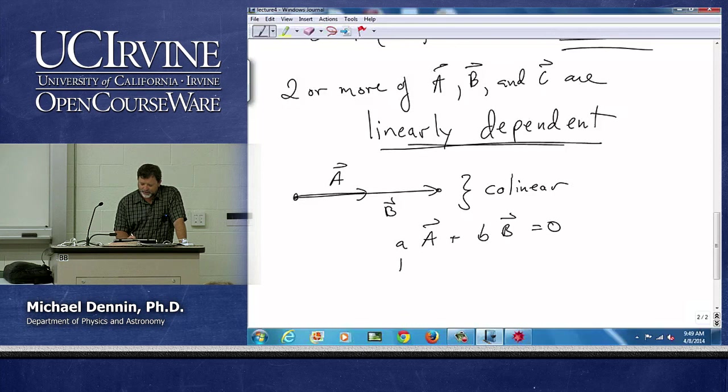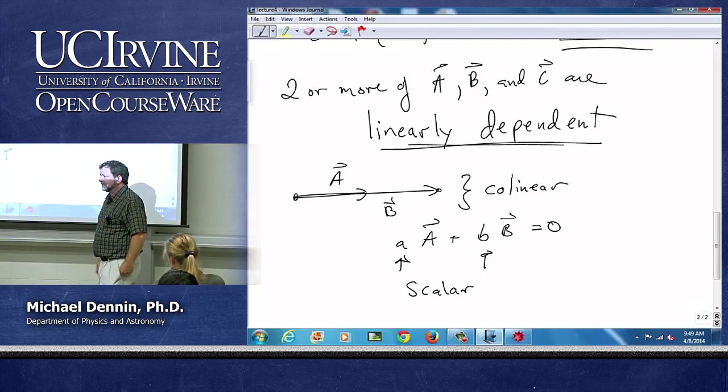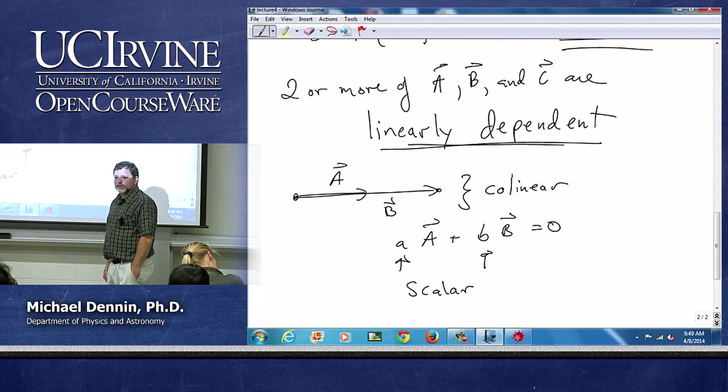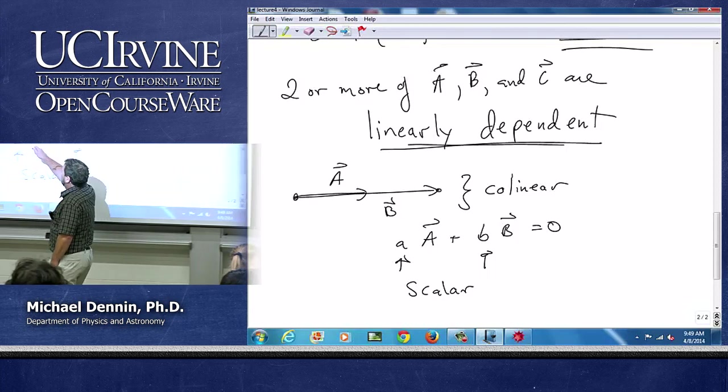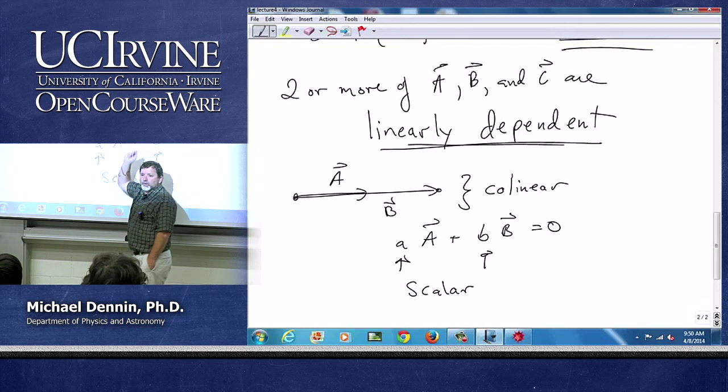If I want to take a scalar and multiply it by each of those vectors and add it to zero, can I do that when they're collinear? Yeah, what do I need to do? What would I need to do to make it so that the vector something times a plus something times b is zero? What would I do?